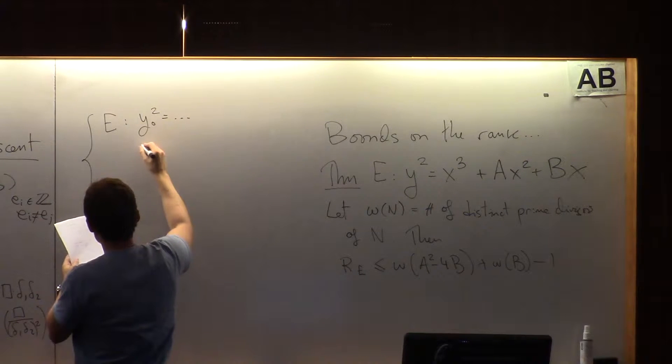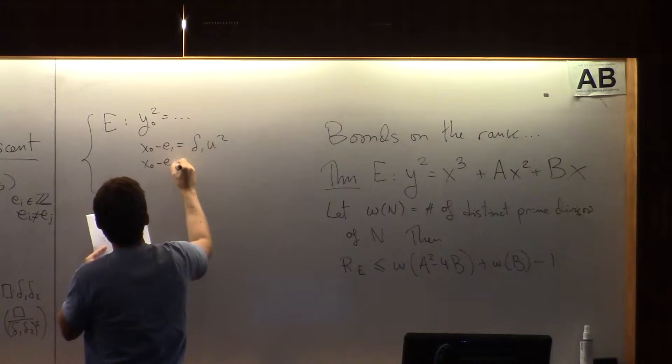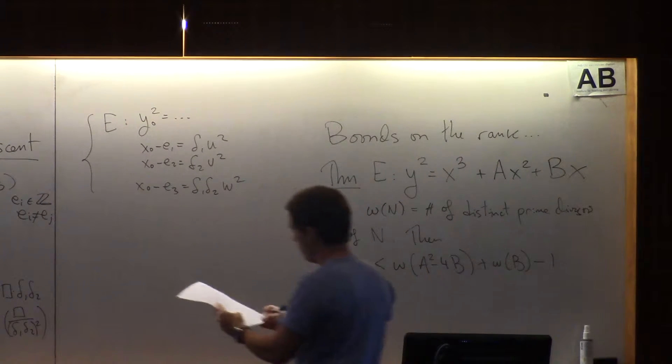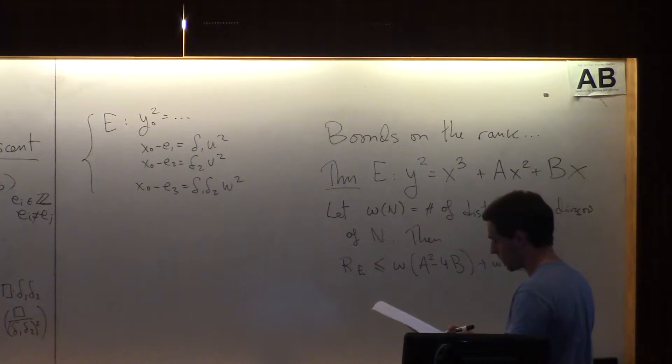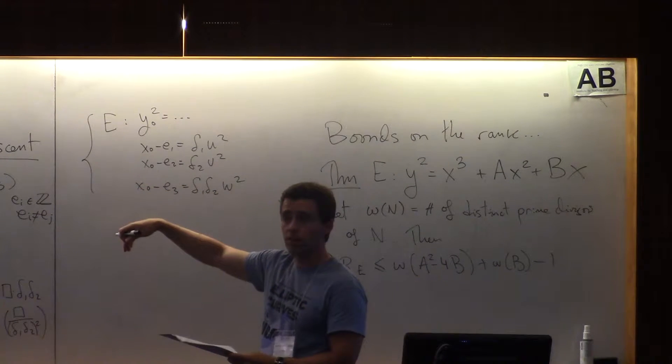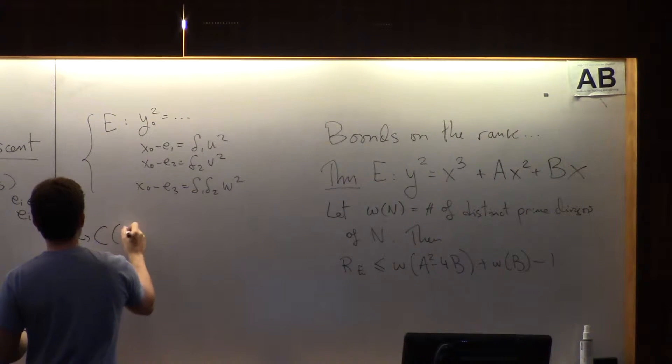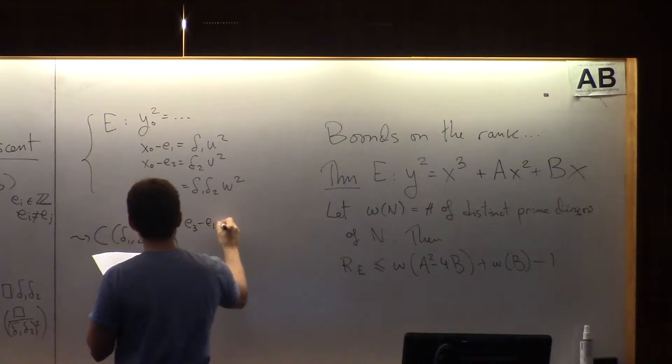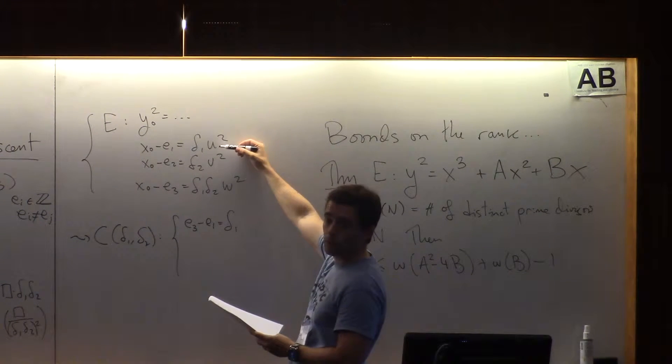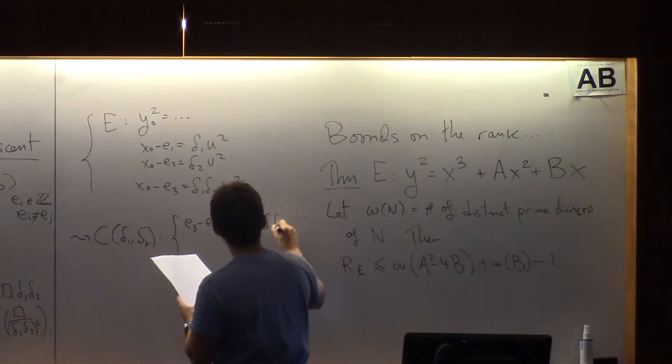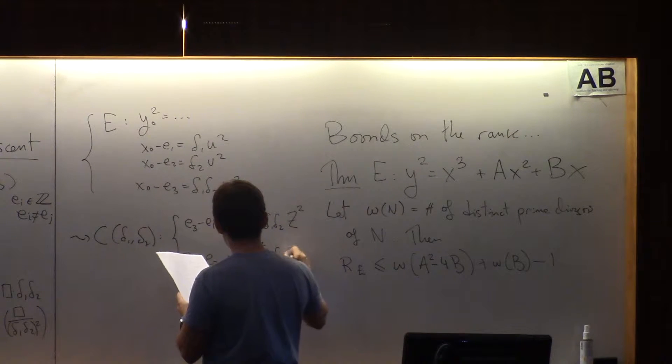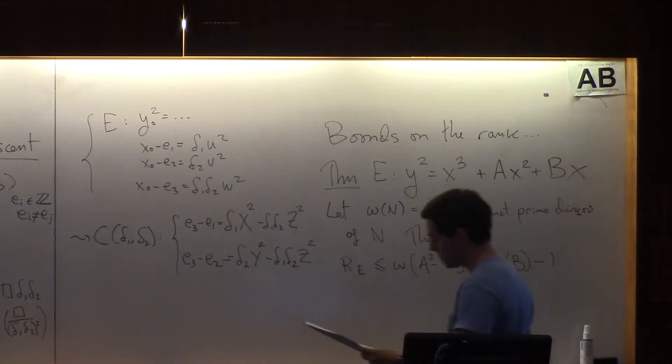This is a square which can be thrown into w. This is a rational number. This is a square so it can be put in w. So I'm going to actually substitute delta-3 by delta-1, delta-2, and it's all the same. So now I have that equation: x0 minus e1 is delta-1 u squared, x0 minus e2 is delta-2 v squared, and x0 minus e3 is delta-1 delta-2 w squared.